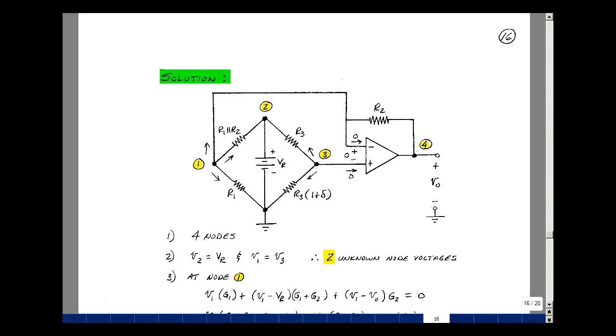Now how many nodes do we have in the circuit? Well, I've got one node, two nodes, three nodes, four nodes with respect to ground. But I do know this voltage, V sub R, and I also know that whatever the voltage V1 is, it's the same as V3 because there's a difference of 0. So although there's four node voltages here, there's really only two unknowns.